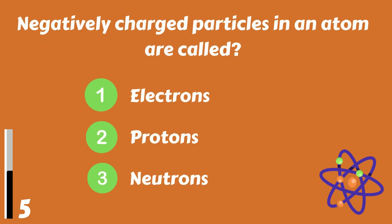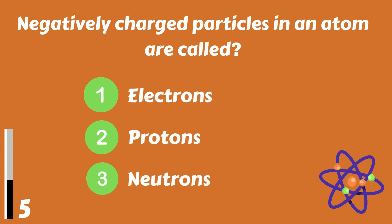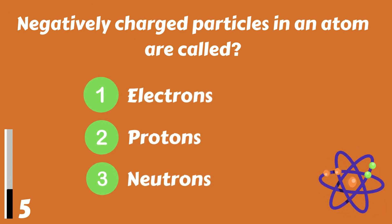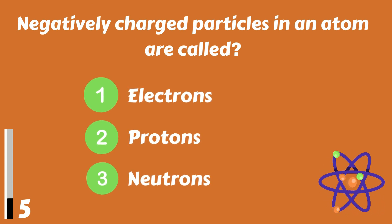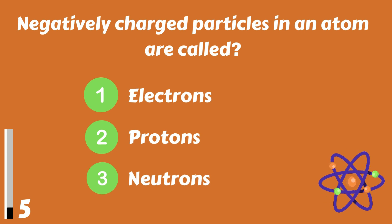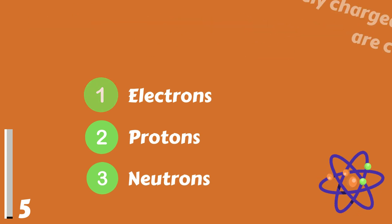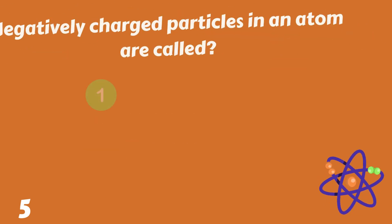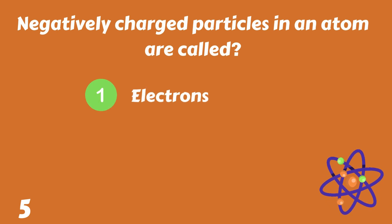Negatively charged particles in an atom are called electrons, protons or neutrons. The answer is electrons.